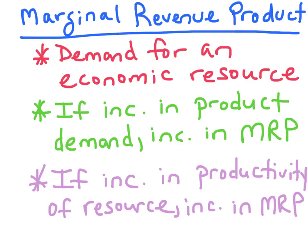The marginal revenue product of an economic resource is the demand for an economic resource — so it's the demand for labor. If there's an increase in the product demand, there'll be an increase in the demand for the resources used to create the product. That's an increase in marginal revenue product, also known as derived demand.